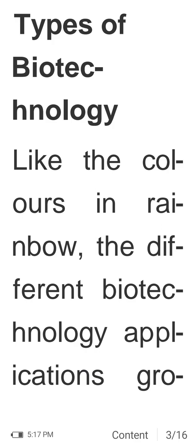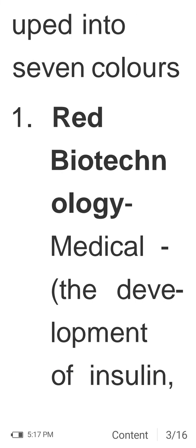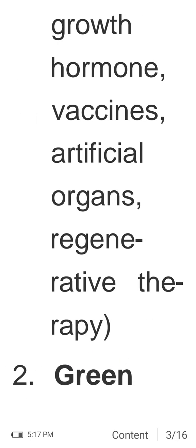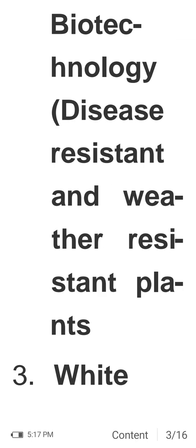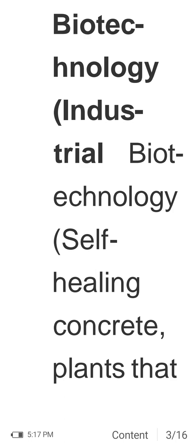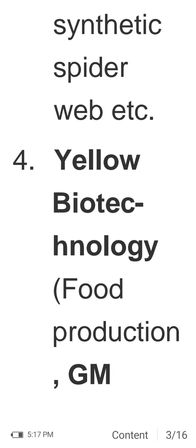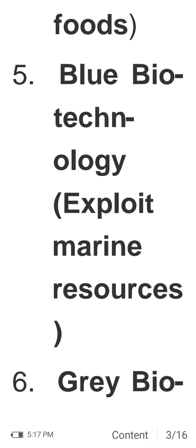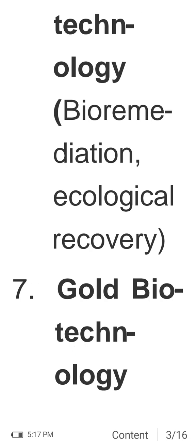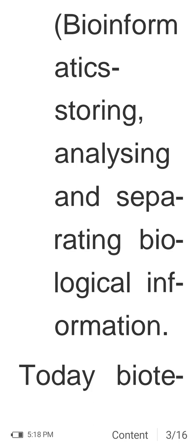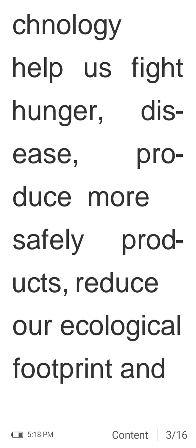The types of biotechnology are grouped into seven colors like a rainbow. Red biotechnology covers medicine: development of insulin, growth hormone, vaccines, artificial organs, and regenerative therapy. Green biotechnology involves disease-resistant and weather-resistant plants. White biotechnology is industrial biotechnology, including self-healing concrete, plants that change color when detecting explosives, and clothing made with synthetic spider silk. Yellow biotechnology covers food production and GM foods. Blue biotechnology exploits marine resources. Grey biotechnology covers bioremediation and ecological recovery. Gold biotechnology covers bioinformatics — storing, analyzing, and separating biological information.